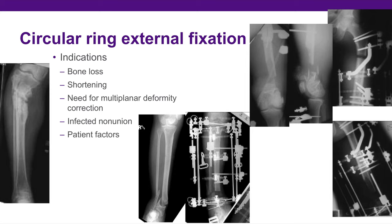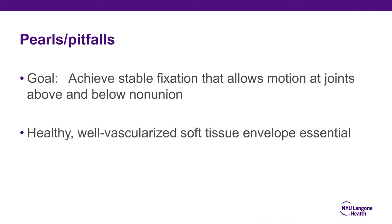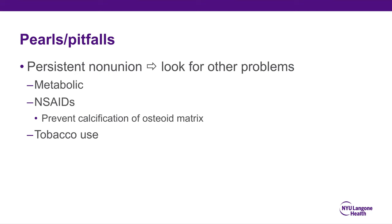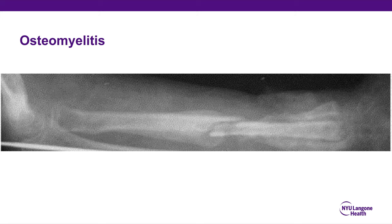Circular ring external fixation is indicated in instances of bone loss, shortening, need for multi-planar deformity correction, infected non-unions, and patient factors where you don't have an appropriate soft tissue envelope to expect adequate healing. Your pearls in dealing with non-unions: achieve stable fixation that allows motion at joints above and below the non-union. A healthy, well-vascularized soft tissue envelope is essential. If you have a persistent non-union, look for other problems — metabolic issues, NSAIDs which can prevent calcification of the osteoid matrix, and tobacco use.